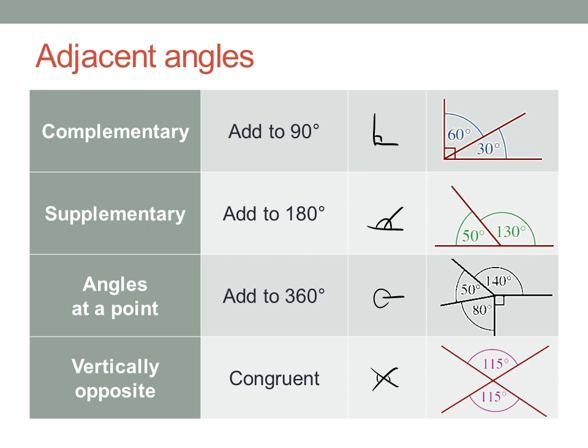The first two rules here are just describing the sizes of right angles and straight angles. Angles in a right angle are complementary. They add up to 90 degrees. Angles on a straight line add to 180 degrees.